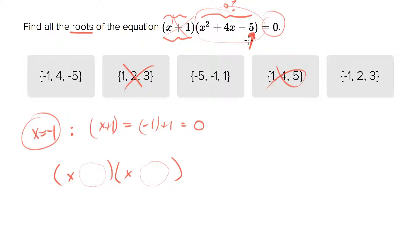So what two numbers when you multiply them give you negative five and when you add give you positive four?